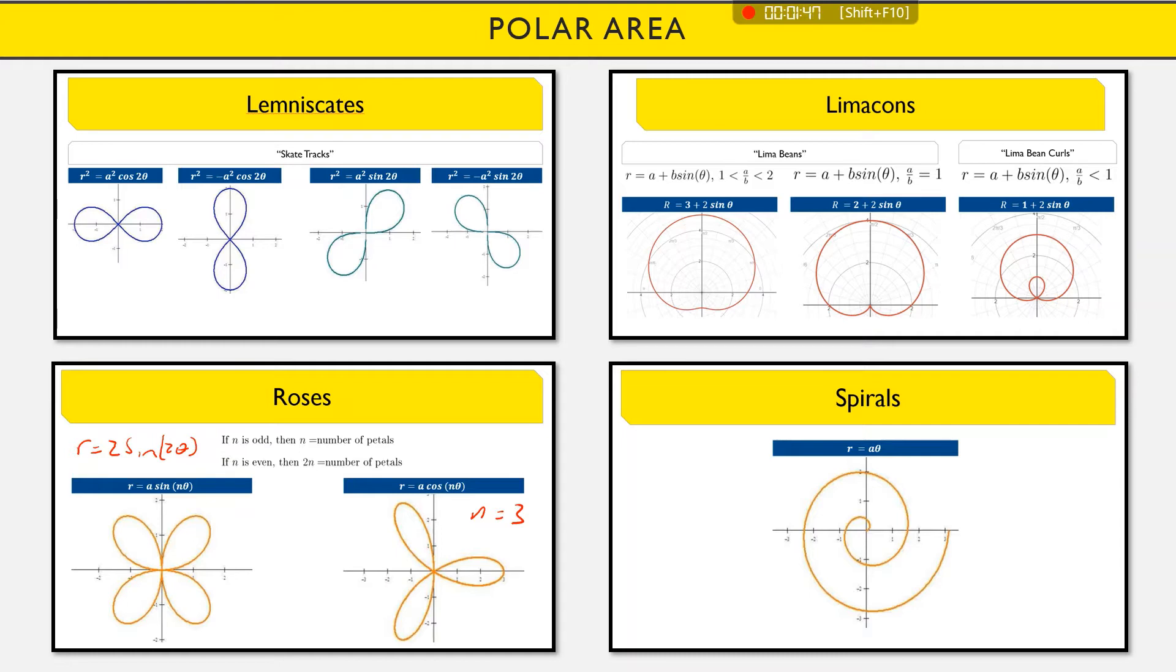So this one could potentially be something like r equals two sine two theta, if I had to guess. Because my radius looks like I'm getting out to about two-ish. And I've got four petals. So if this is an even number two, then I'll have twice that number for petals. Versus this one would be n equals three. Because we have three petals, and if you have an odd number, that is the number of petals. Any questions on our shape stuff? No. Cool.